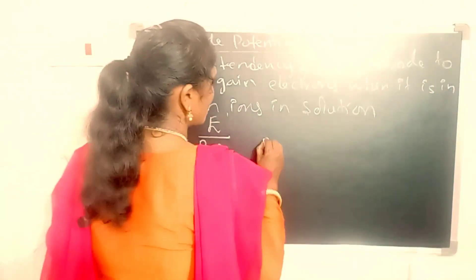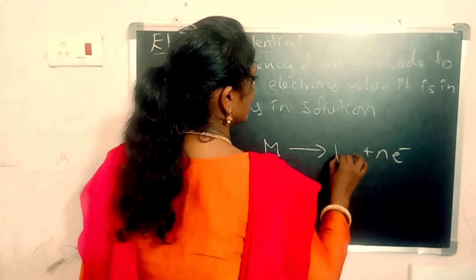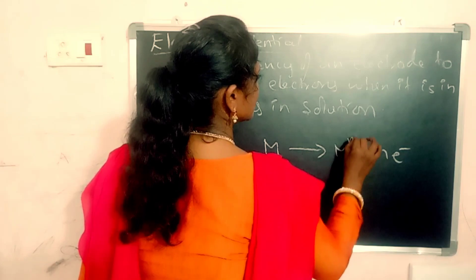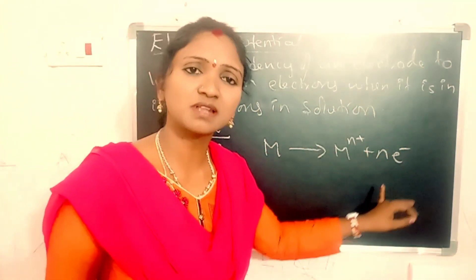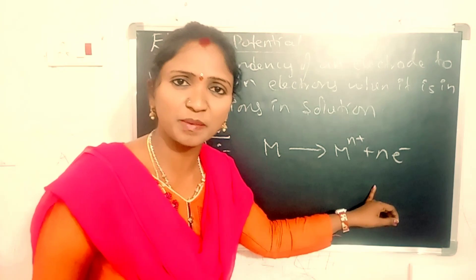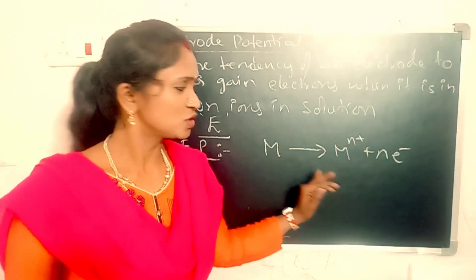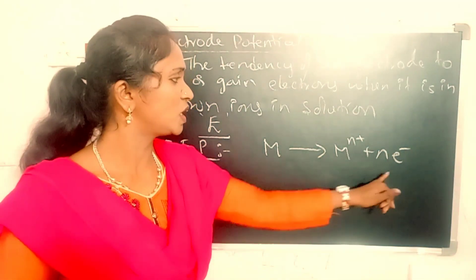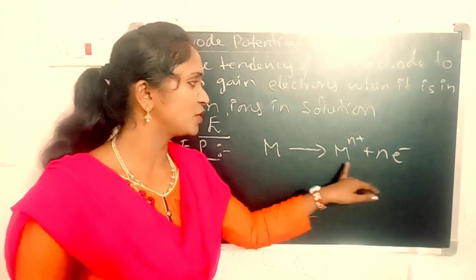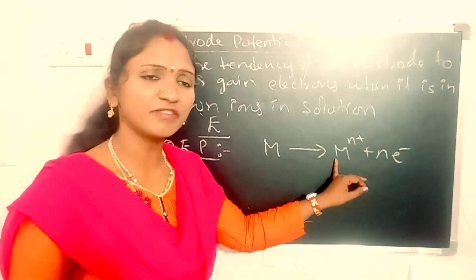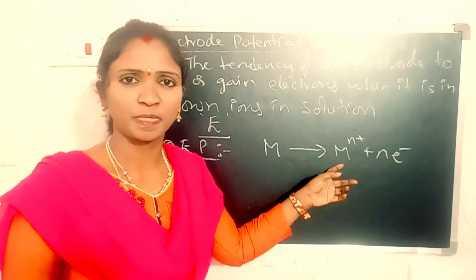A metal can lose n number of electrons and the metal gets M n-plus ion. So the metal losing n electrons and becoming M n-plus is called loss of electrons, and this is called as oxidation electrode potential.